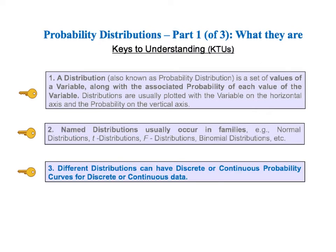Key to understanding number three tells us that different distributions can have discrete or continuous probability curves for discrete or continuous data.